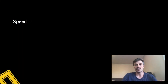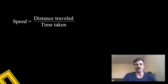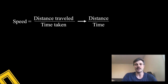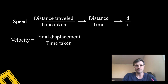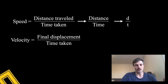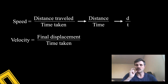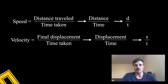Speed is the distance traveled divided by the time taken — distance per time — abbreviated as d over t. Velocity is displacement over time, which we write as s over t. It's more accurate to say change in displacement for that time interval, because we're talking about the displacement during the time interval being measured, not necessarily from an origin.